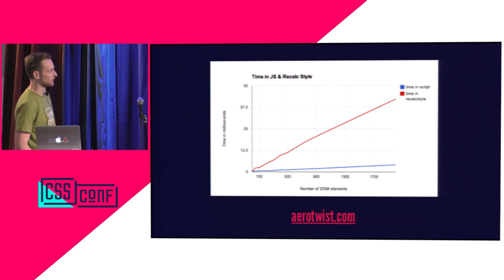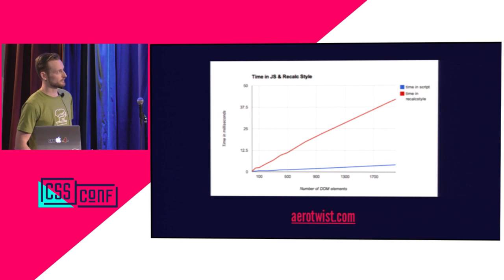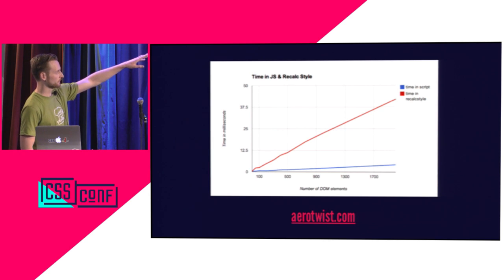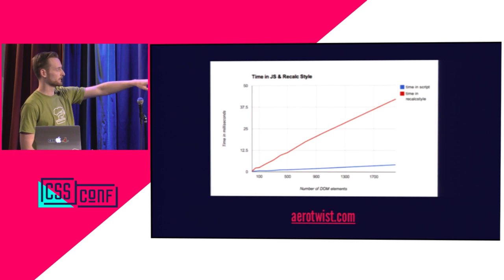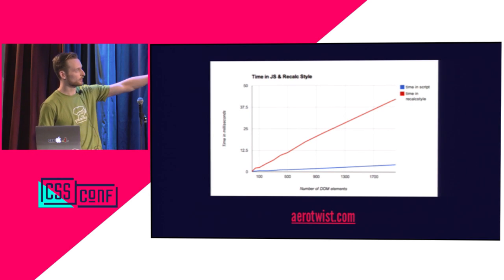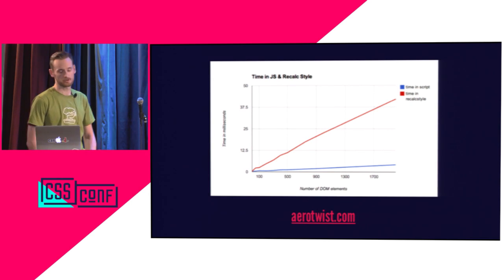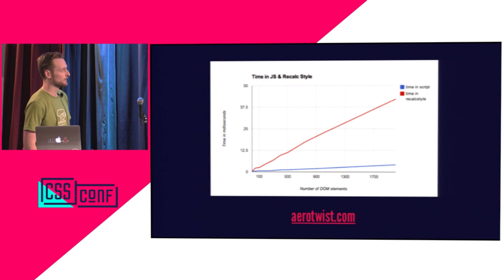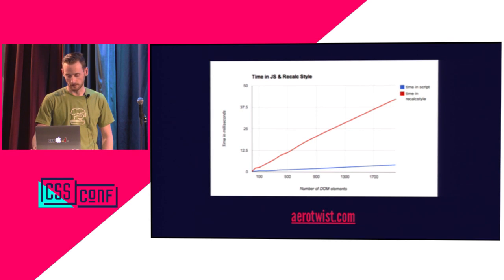This is an interesting graph — the y-axis is time and the x-axis is the number of DOM elements. The blue line is time in script, and the red line is recalculation time. Recalculation time really has that linear growth based on how many DOM elements you have — it really shoots up. That comes down to performance in the UI and what CSS properties you're using and how the browser works.